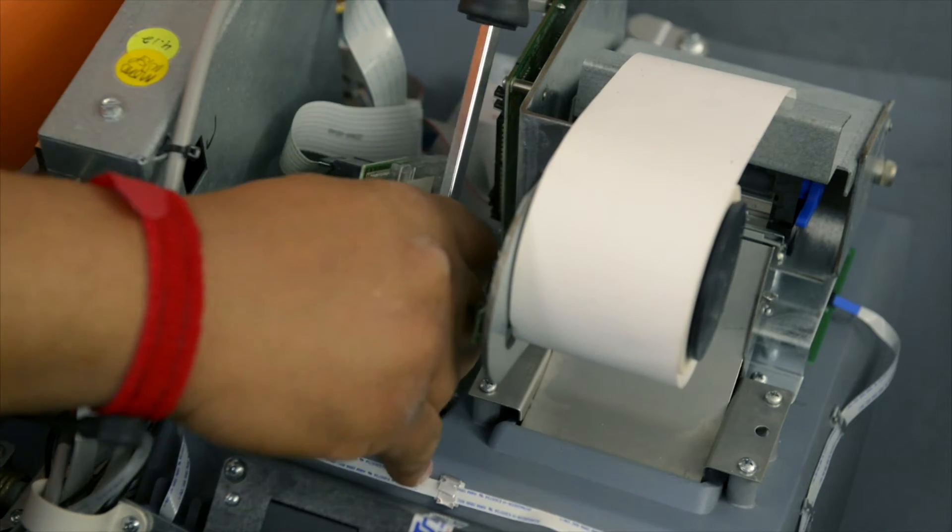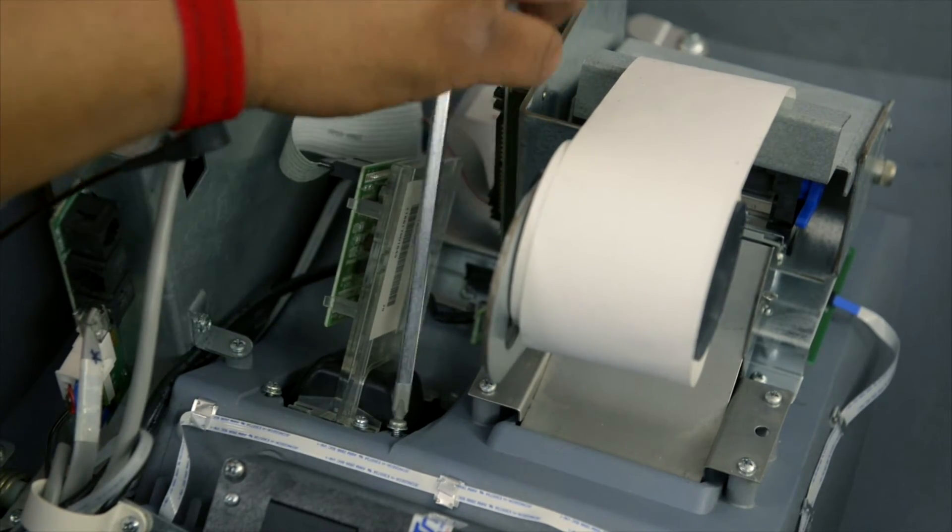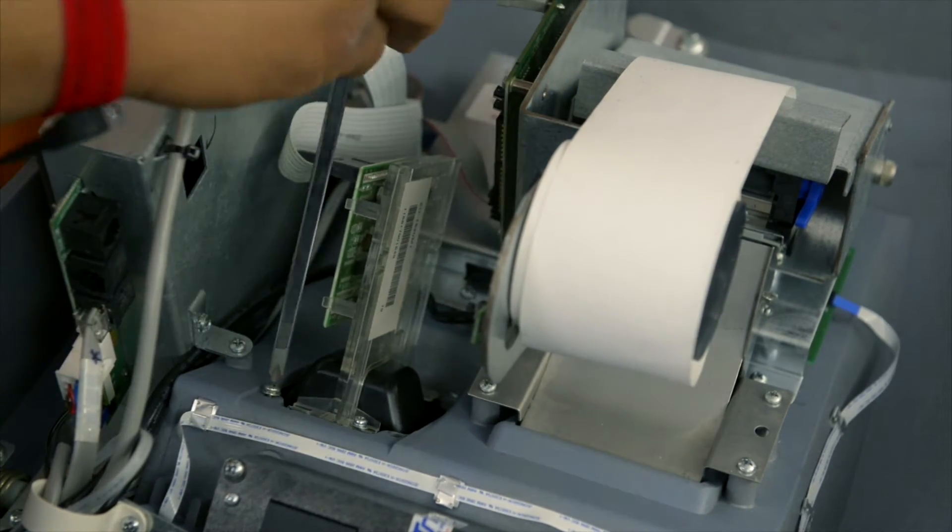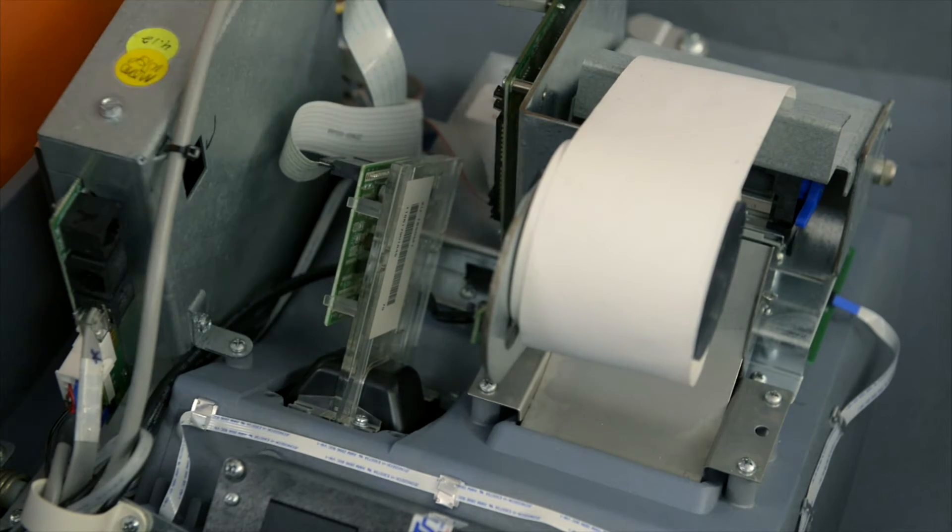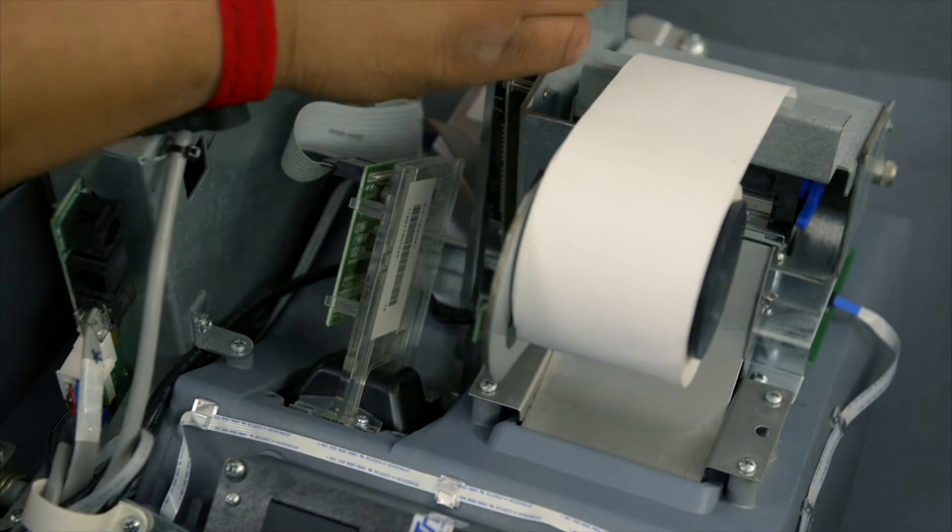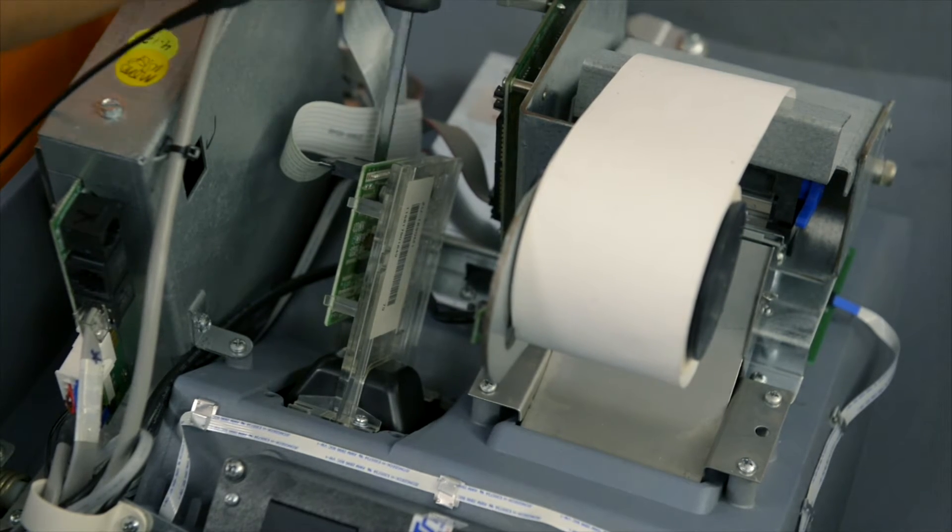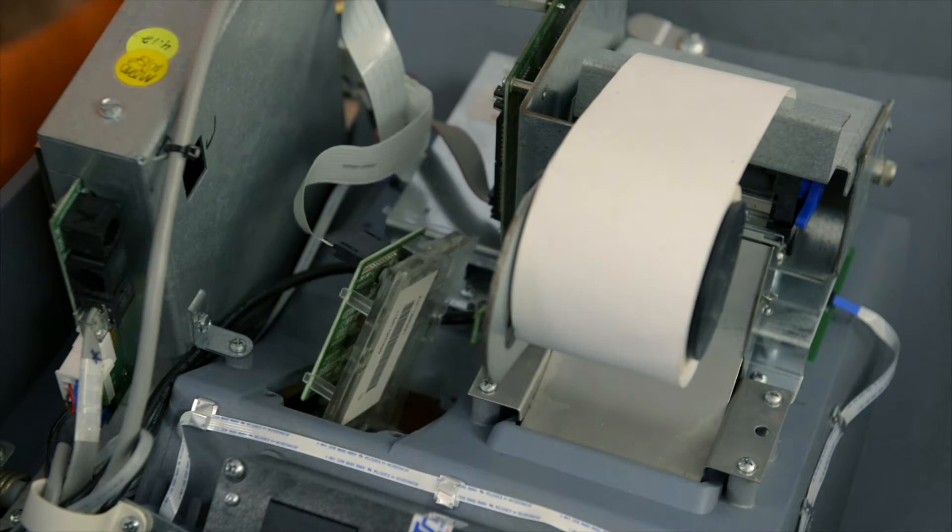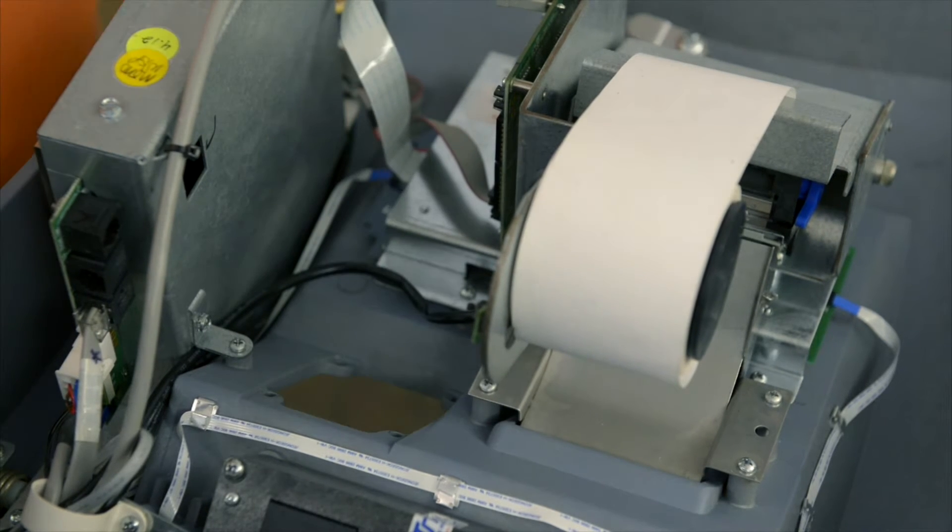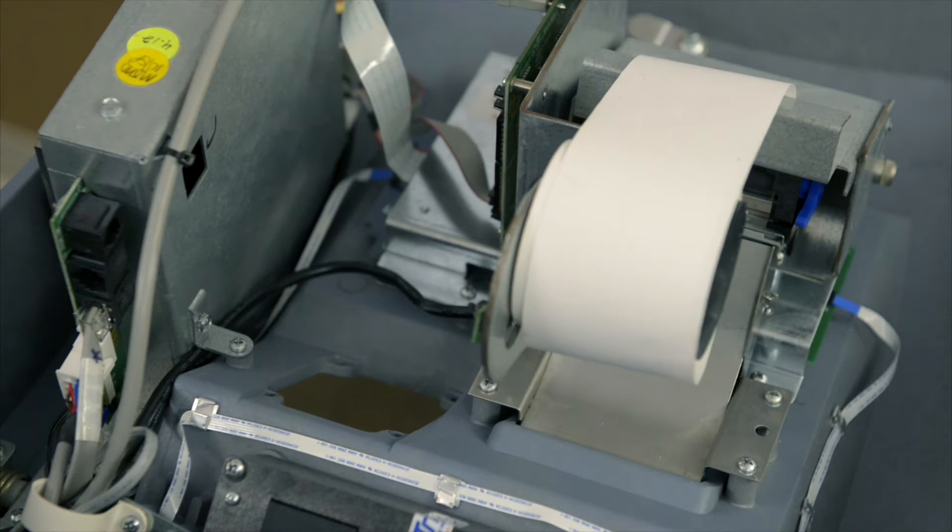Remove your existing card reader. There are four screws that are holding it in place. Disconnect your cable to the motherboard and install your new EMV card reader.